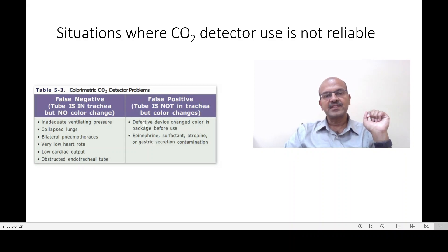When it is not in the trachea but the color changes, this is usually due to a defective device where it changed color in the package, or if something has spilt on it like epinephrine, surfactant, atropine, or gastric secretion contamination. It is very important if anything is contaminating, you should replace it with a new one immediately.